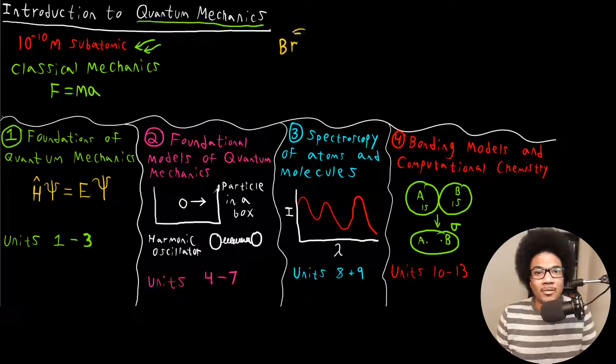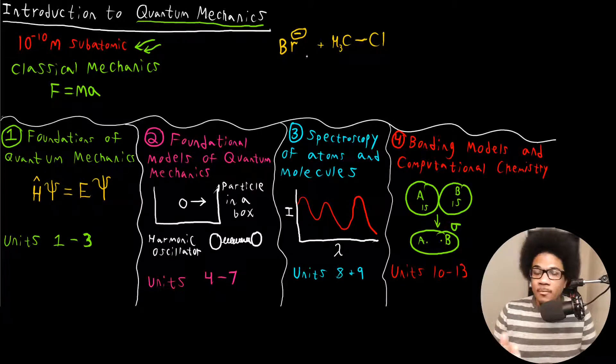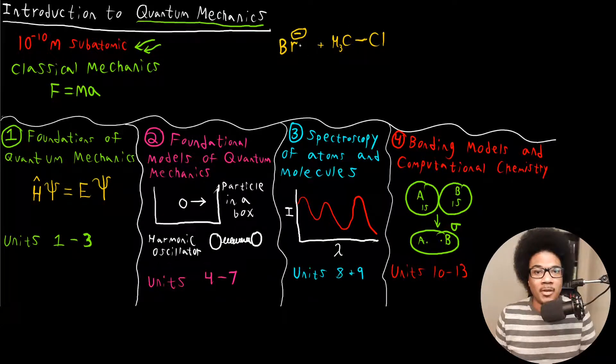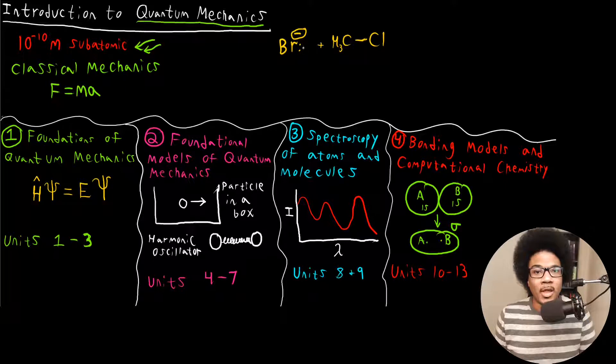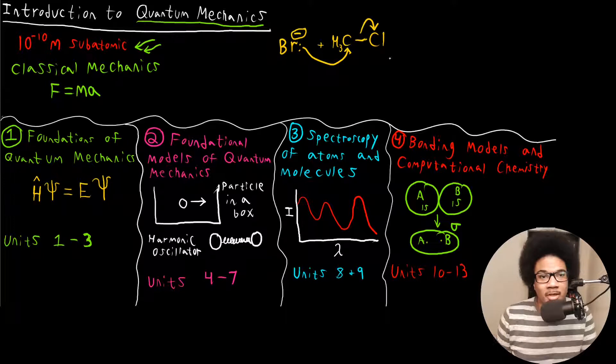Let's look at a simple SN2 reaction where we have a bromine anion interacting with methyl chloride. If you remember these types of substitution reactions, you know exactly what's going to happen here. You know that an electron pair from bromine is going to attack this central carbon. So we'll have this electron pair interacting with the carbon that's going to break this bond between carbon and chlorine.